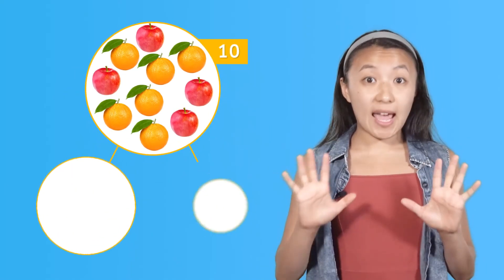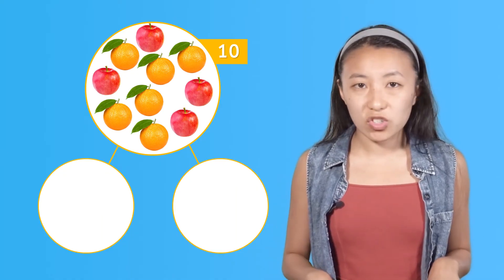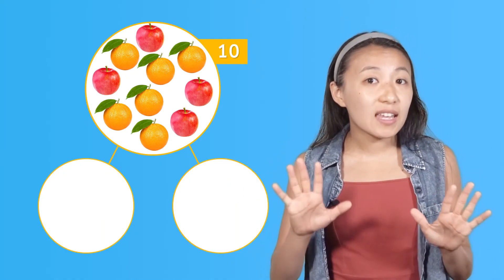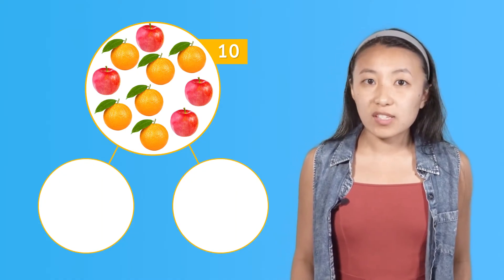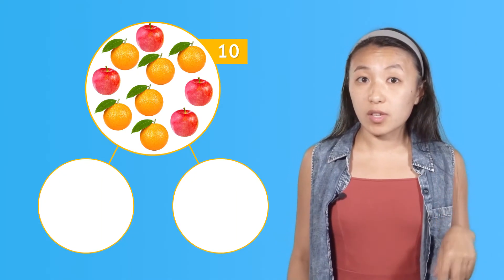Here's the amazing thing about parts and whole — they help us think about numbers in all sorts of different ways. We've been thinking about our whole, 10, as having a part of 4 and a part of 6. But could we break it into different parts? There is definitely more than one way to break a whole into parts. Let's put these fruits all together again. This whole group has 10. Forget about apples and oranges — let's think about a different way to break 10 into parts. What if I told you that this whole of 10 is made up of two parts: fruits and vegetables? How many would be in each part then? You can pause the video here and think about this.